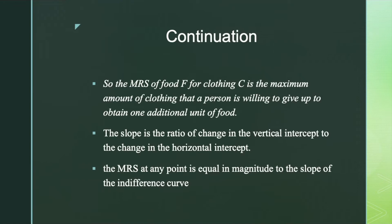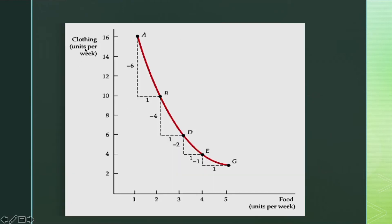For example, if the MRS is 3, then this means that the consumer will give up 3 units of clothing to obtain one additional unit of food. If the MRS is half, then it means that the consumer is willing to give up only half a unit of clothing. Here, clothing appears on the vertical axis and food on the horizontal axis. When we describe the MRS, we must be clear about which good we are going to give up and which we are getting more of. We will define the MRS in terms of units of clothes that the consumer is willing to give up in order to obtain one extra unit of food.